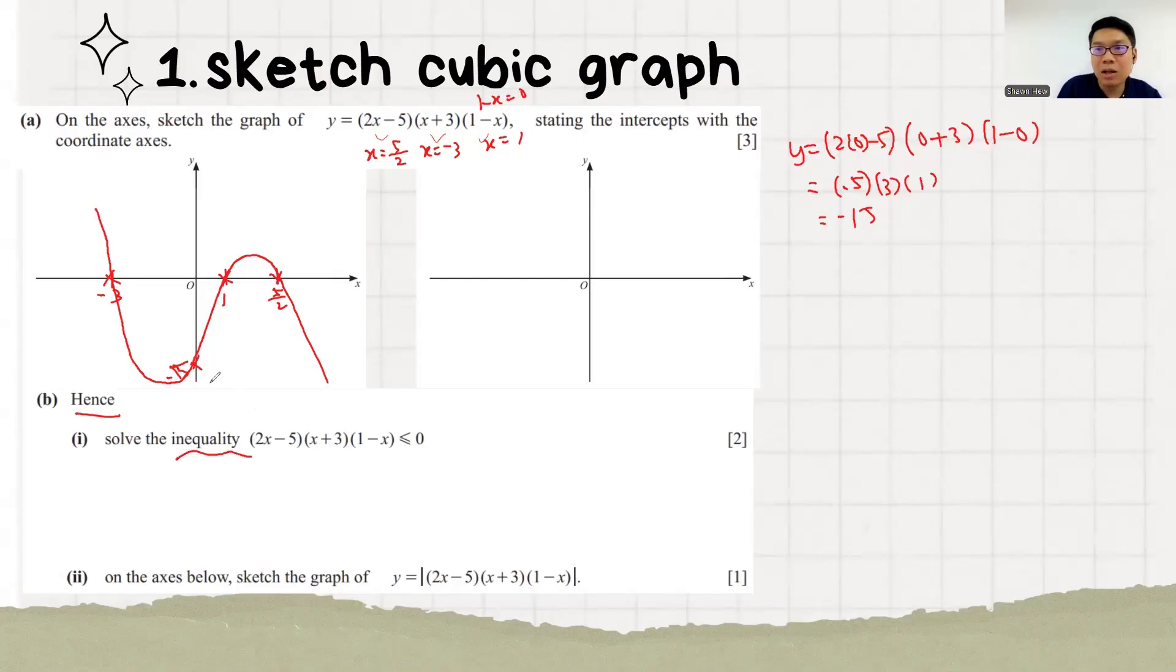Then hence, they ask you to solve the inequalities. As I say, for the cubic inequalities, we need to use the graph to solve. So this thing is my y. So y less than 0. Y equals to 0 is this line. Below this line means this region and this region. X is in between minus 3 and 1. Have the including sign because the question have including sign. The next part is x more than 5 over 2 including.